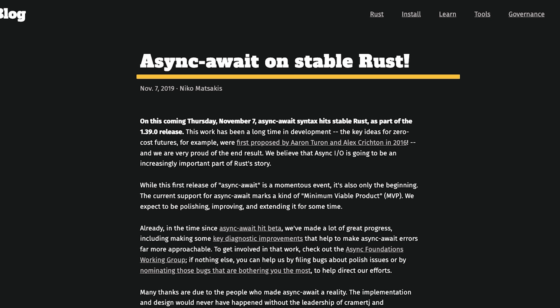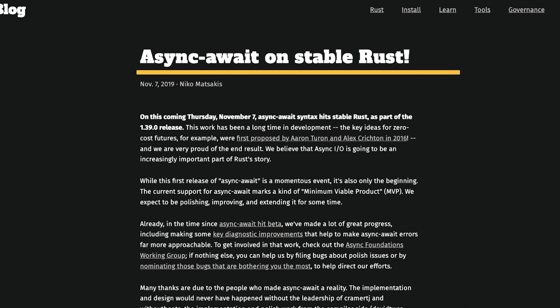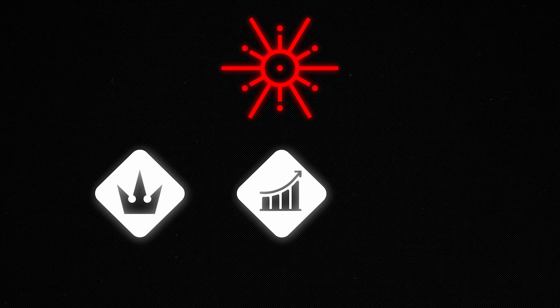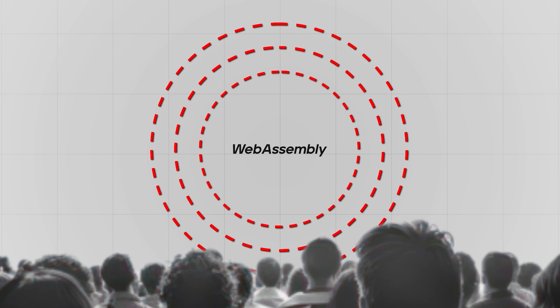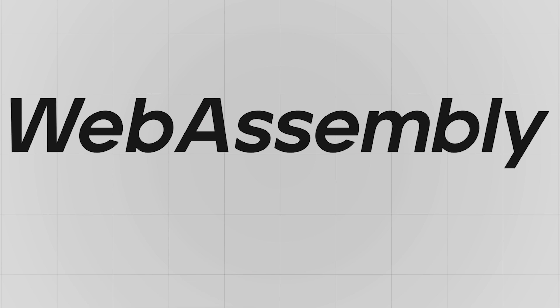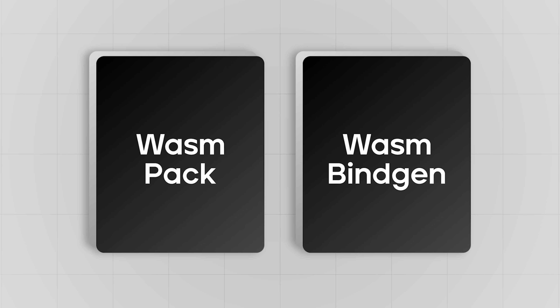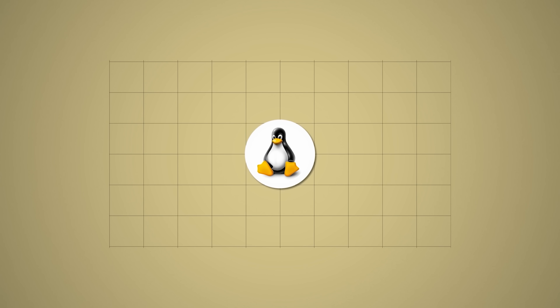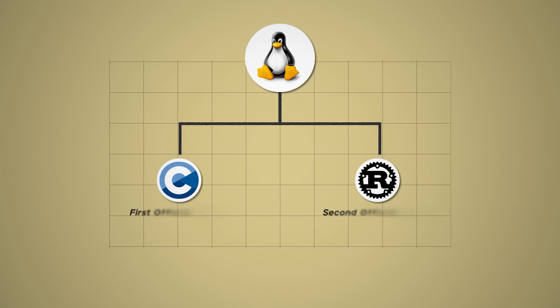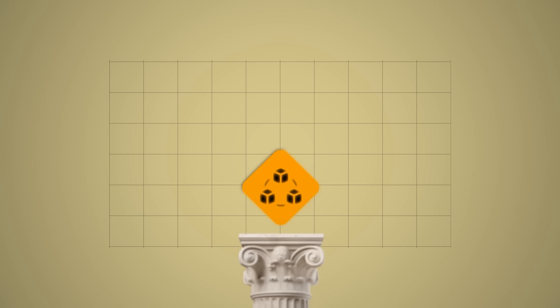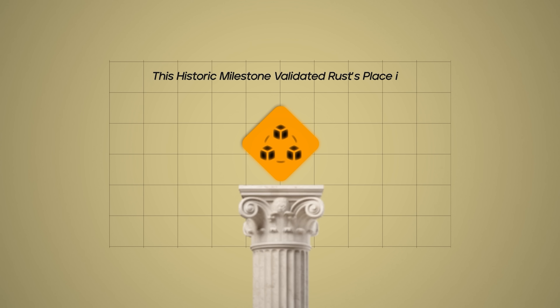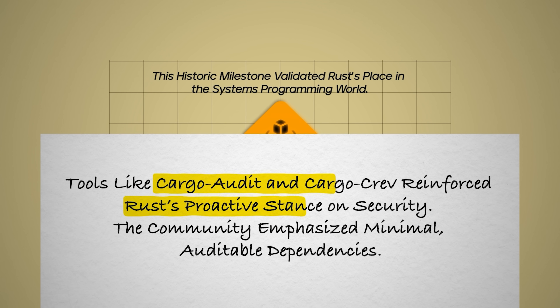After long anticipation, async/await syntax landed in stable Rust in 2019. Tokio emerged as the dominant async runtime, powering high-performance scalable applications. Rust became a favorite for WebAssembly due to its performance, safety, and small binaries — tools like WasmPack and WasmBindgen simplified integration. In 2022, the Linux kernel accepted Rust as a second official language, starting with experimental modules. This historic milestone validated Rust's place in the systems programming world. Tools like Cargo Audit and CargoCrev reinforced Rust's proactive stance on security, with the community emphasizing minimal, auditable dependencies.